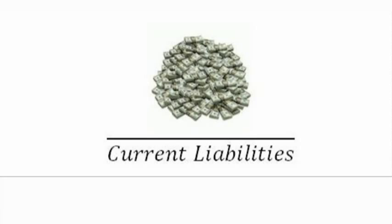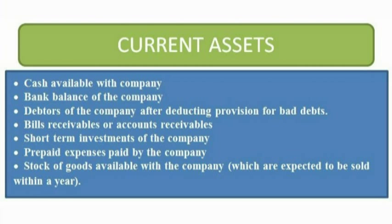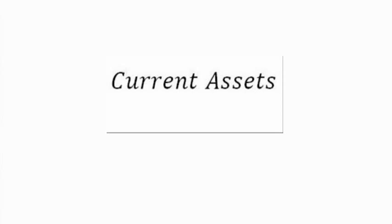The first ratio we're going to cover is the current ratio. The current ratio is used to determine how well a company could pay off its short-term liabilities with its short-term or current assets. Current assets are cash and other assets that can easily be converted into cash within 12 months. The current ratio is defined as all current assets divided by all current liabilities.